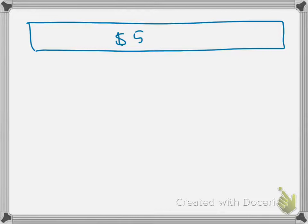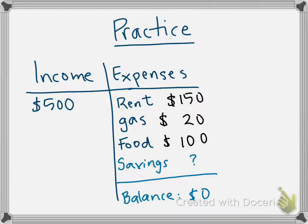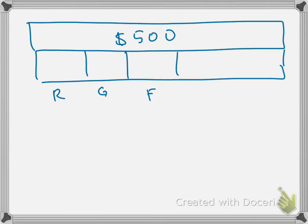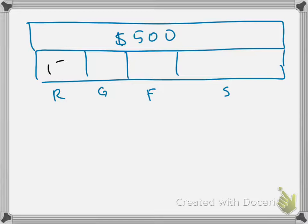You have a total, which is your income of $500, and you're taking away different things — rent, gas, food, and savings. When you add all the expenses, they should also equal $500 because the top equals the bottom. So rent is $150, gas is $20, and food is $100.